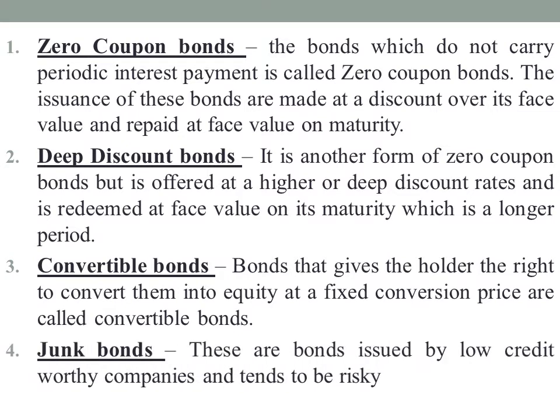Next is junk bonds. These are bonds issued by low credit-worthy companies and these tend to be risky. Bonds issued by low credit-worthy companies are coined as junk bonds. On these types of bonds, the interest rates are much higher than normal bonds, reflecting the higher credit risk.